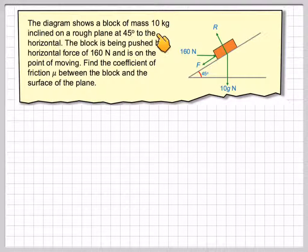The diagram shows a block of mass 10 kilograms inclined on a rough plane, so there will be friction, at 45 degrees to the horizontal. The block is being pushed by a horizontal force of 160 newtons and is on the point of moving. Find the coefficient of friction μ between the block and the surface of the plane.